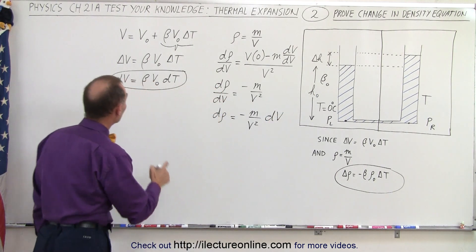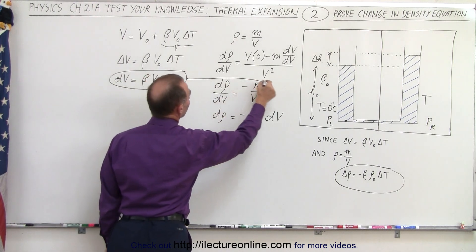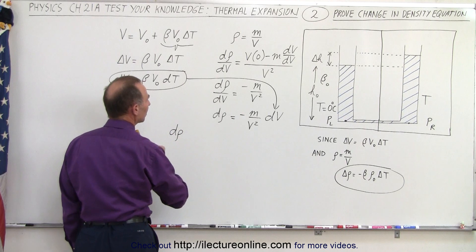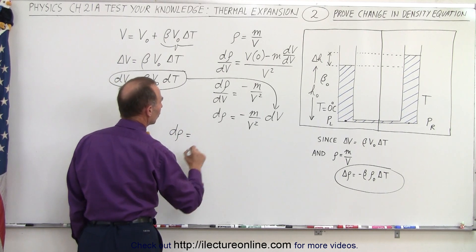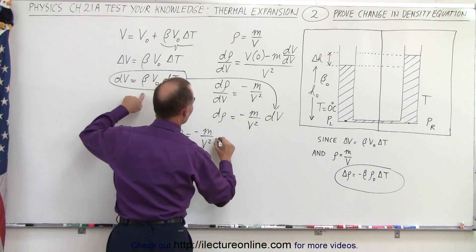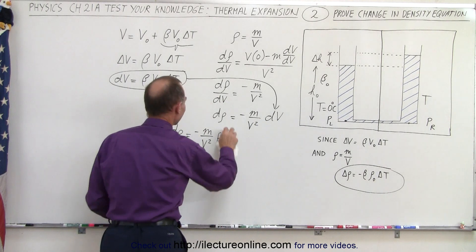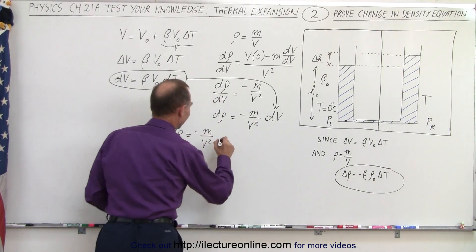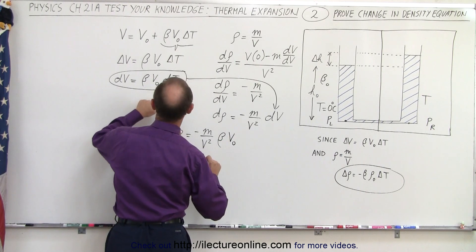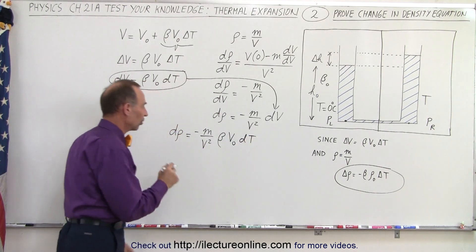Now notice we have an expression for dV, so we can plug that in. The change in density equals minus m over V squared times dV, which equals minus m over V squared times beta times the original volume times the change in temperature.